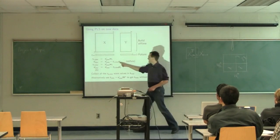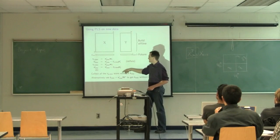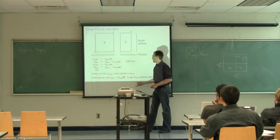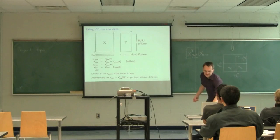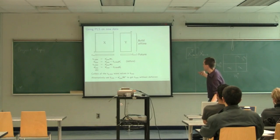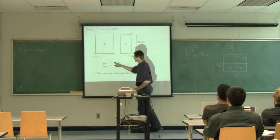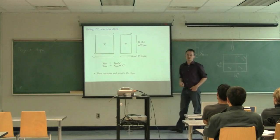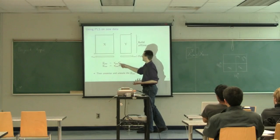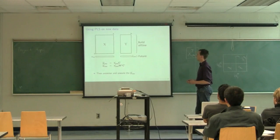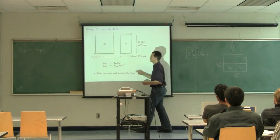To recap: we get our new X vector, multiply it by the W's to get the scores, deflate with the P's, collect all the scores together. Alternatively, we can calculate those scores in one go using W-star. We can then get our Y-hat by multiplying T-new by C-transpose. T-new is a row vector of scores, one by A. C-transpose is an M-by-A matrix, so we get M predictions in the vector Y-new — one prediction for each column of Y.